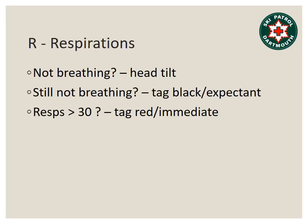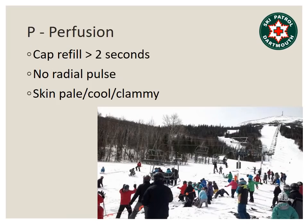If their respiratory rate is less than 30, we go on to P, which stands for perfusion. We're looking for adequate perfusion in the form of capillary refill less than two seconds — which doesn't always happen in a cold environment — so you can also check for radial pulses and assess whether their skin is warm, pink, and dry or pale, cool, and clammy. If their perfusion looks poor, like they're going into shock, we tag them red immediate and move on to the next patient.